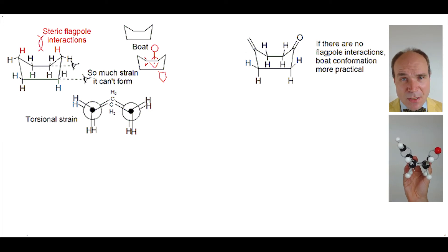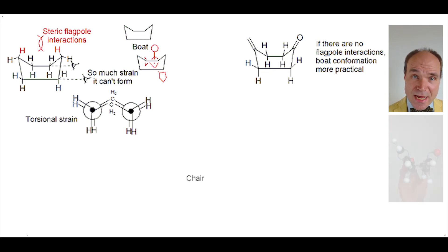And now the boat conformation is part of the transition between one chair form to the other. In this specific case, where the carbons one and four are trigonal planar, we go from chair to half chair to twist boat to boat.